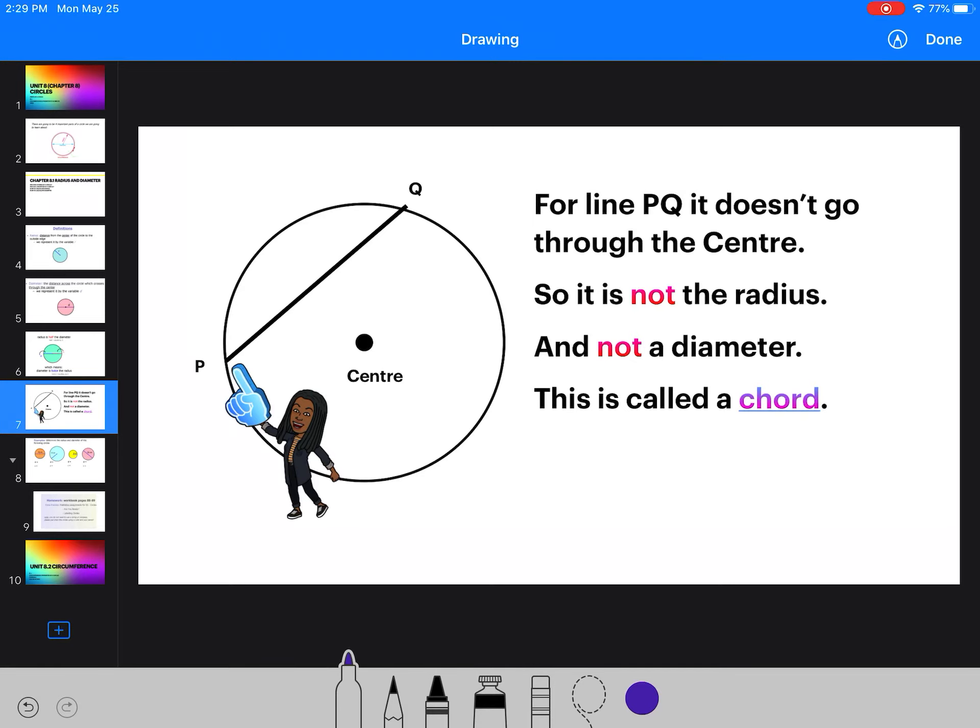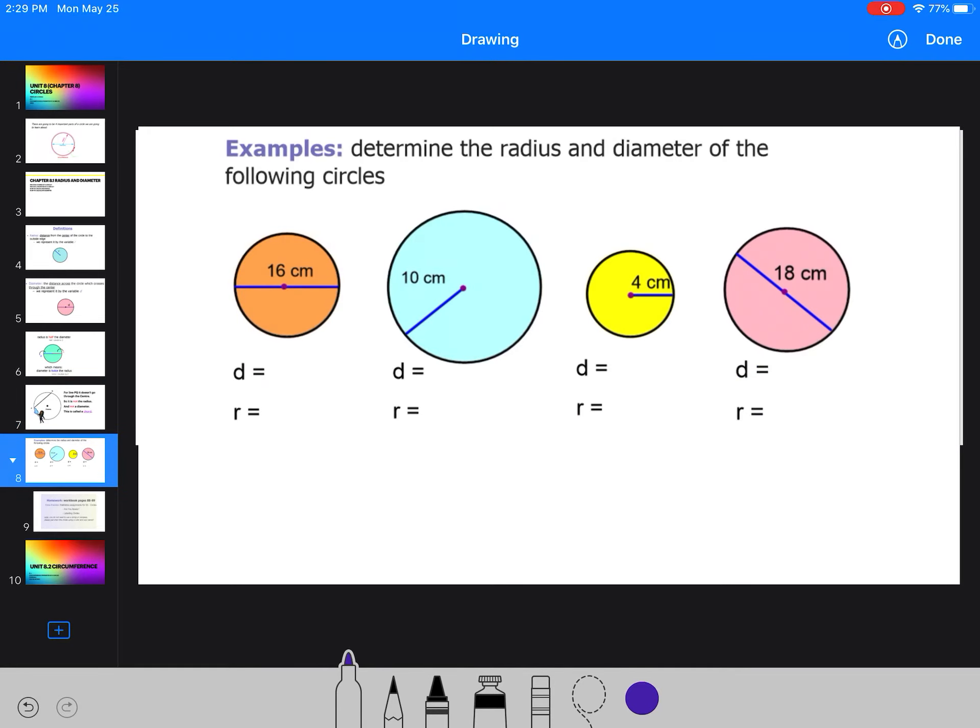Let's look at some examples of diameter and radius. Now, remember, a radius, you multiply it by two to get the diameter. If you have diameter, you divide it by two to get the radius. So here are our examples. The first one would be an example of diameter, because it goes from one end of the circle to the other. So the diameter of this one is 16 centimeters.